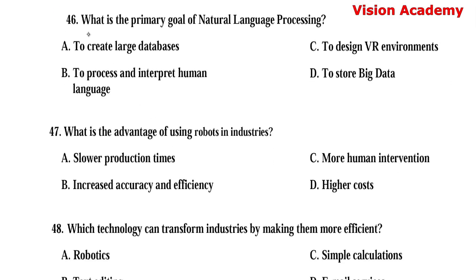Question number 46. What is the primary goal of natural language processing? Option A: To create large databases. Option B: To process and interpret human language. Option C: To design VR environments. Option D: To store big data. Here, option B, to process and interpret human language, is the right answer.